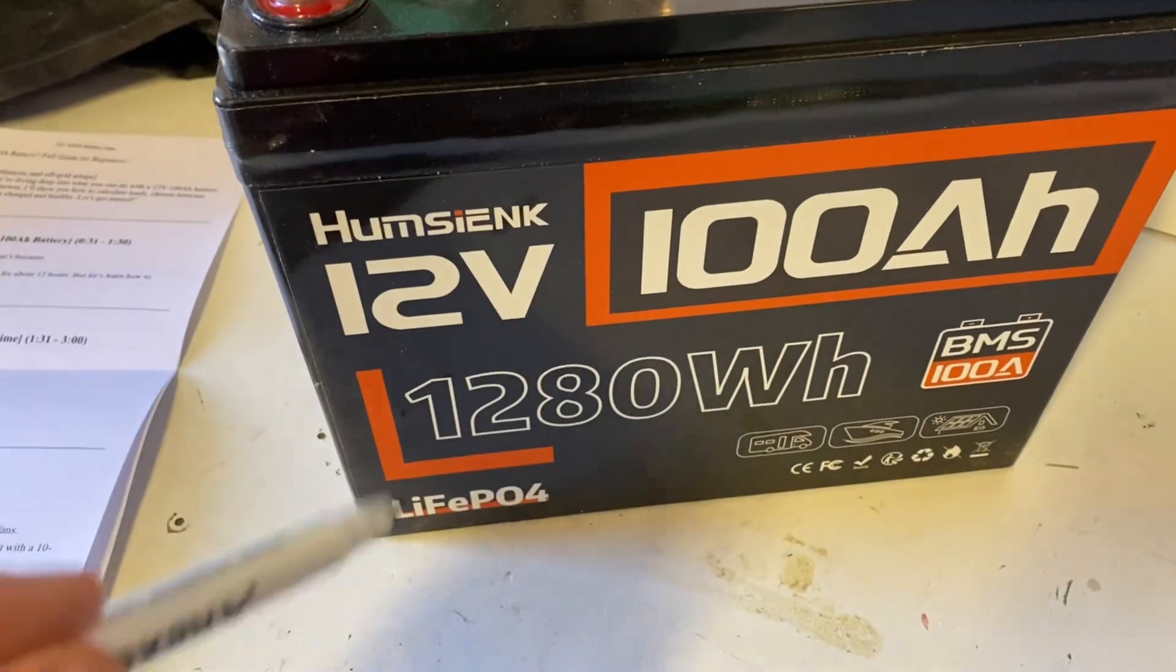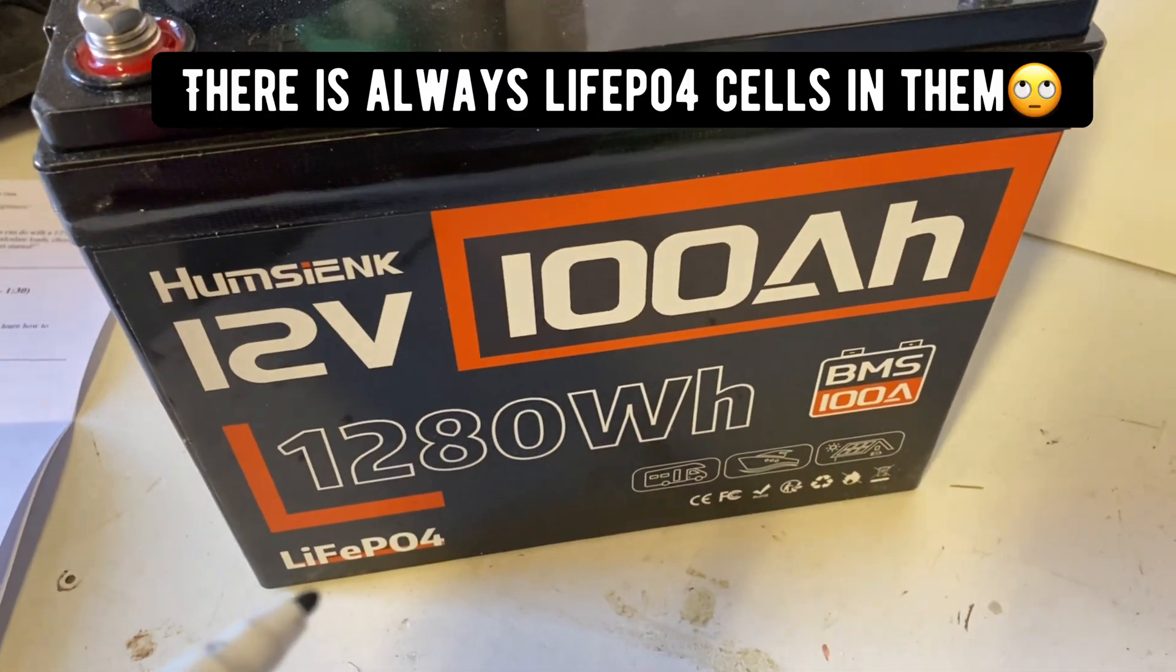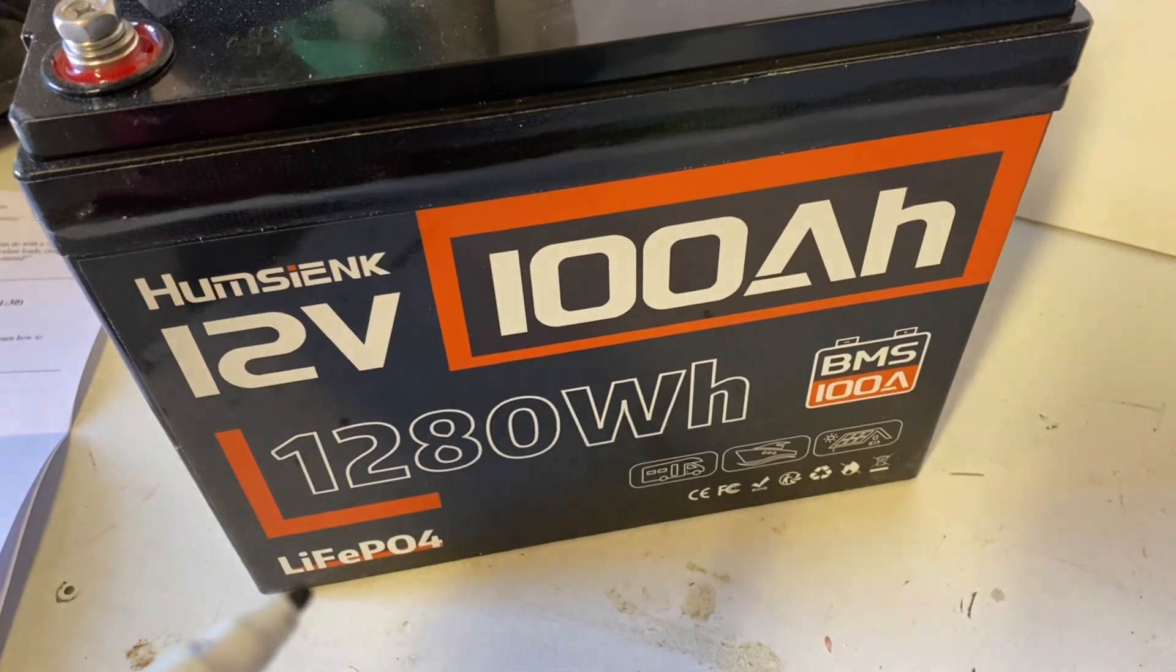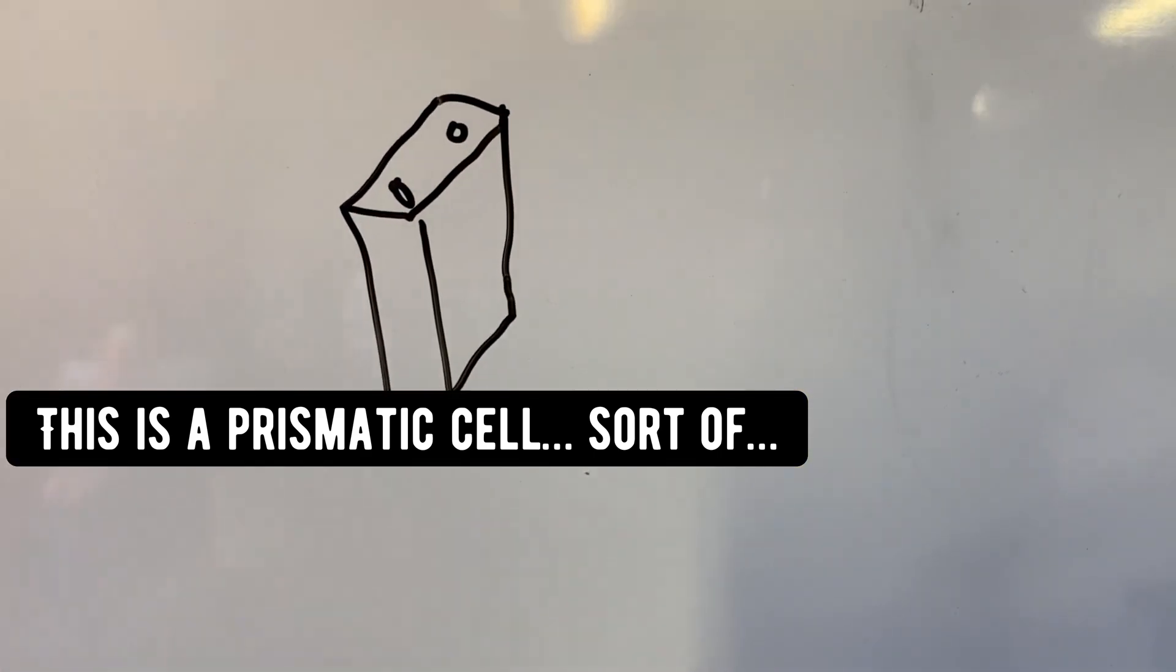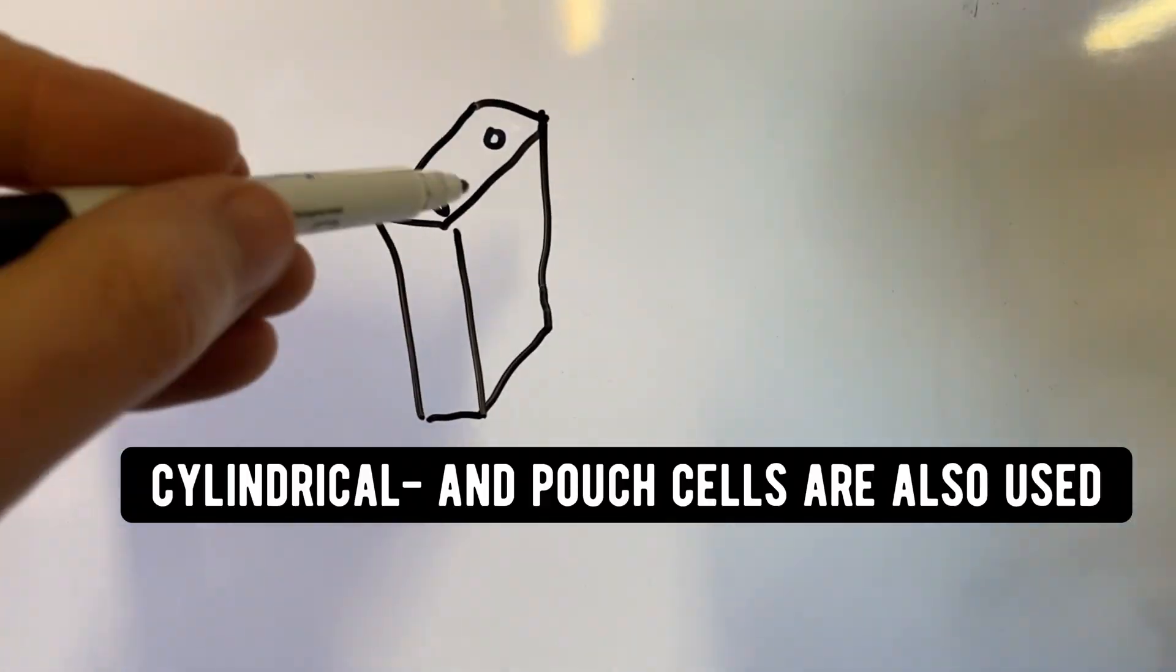Usually in these batteries there are lithium iron phosphate cells, nominal voltage of 3.2. This is a cell.